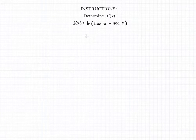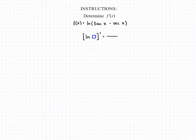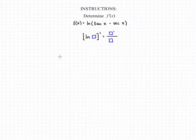In order to find the derivative of f of x, we first need to remember the general form for any derivative that involves the natural log. The general form tells us if we have the natural log of some other function and we want to take the derivative of that, we can do that by taking the derivative of that inside function and placing it over the original function to form a fraction.